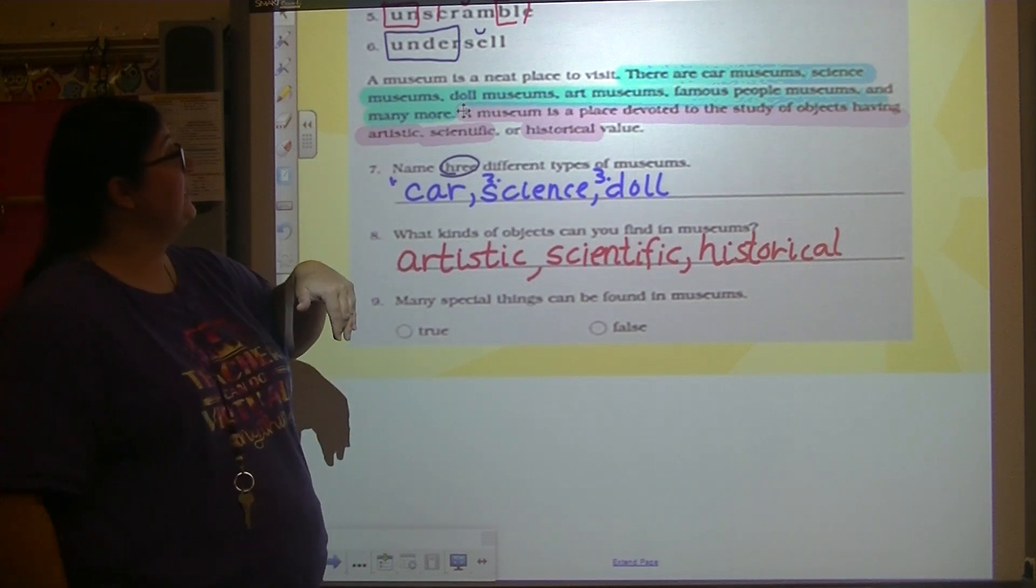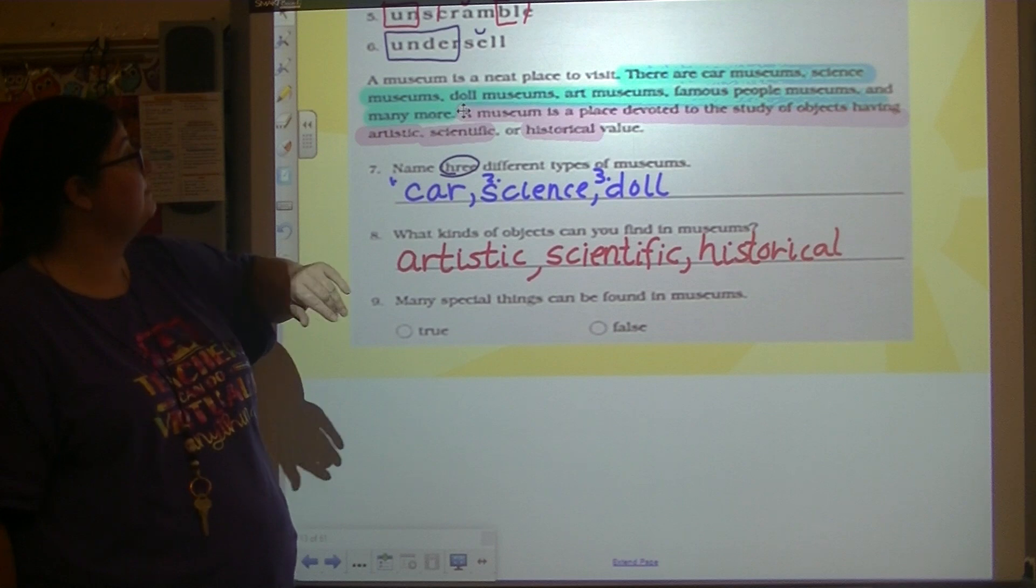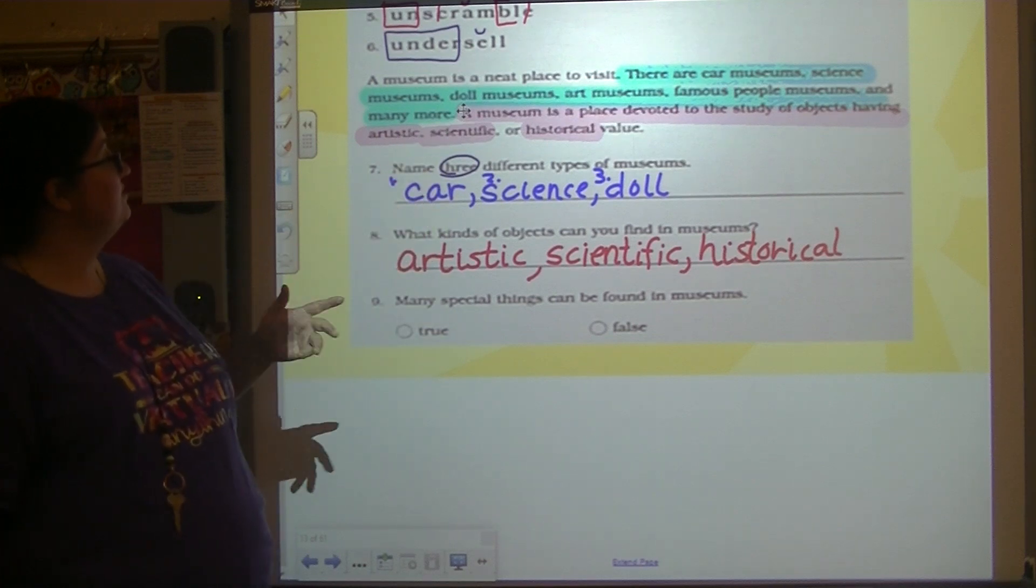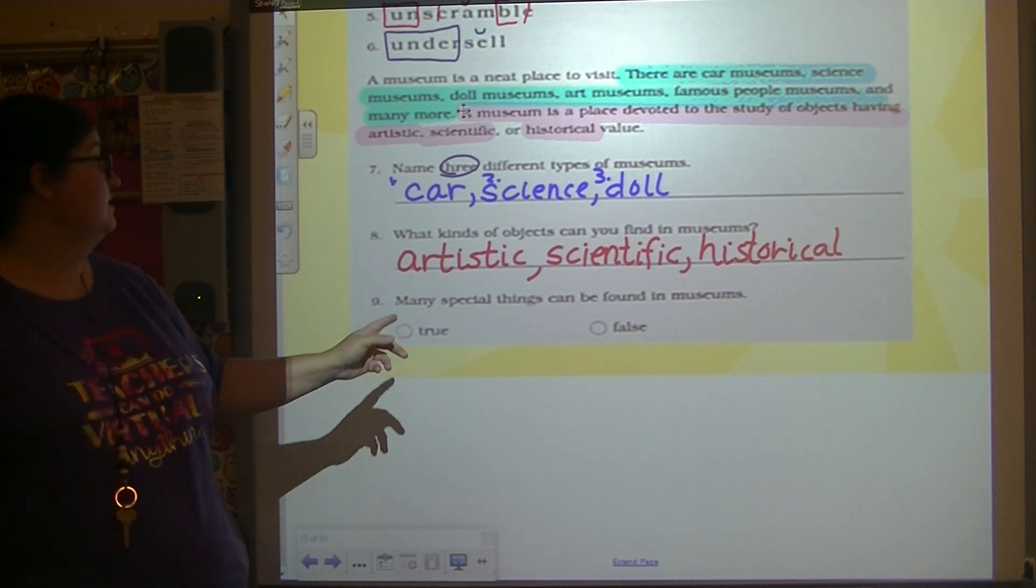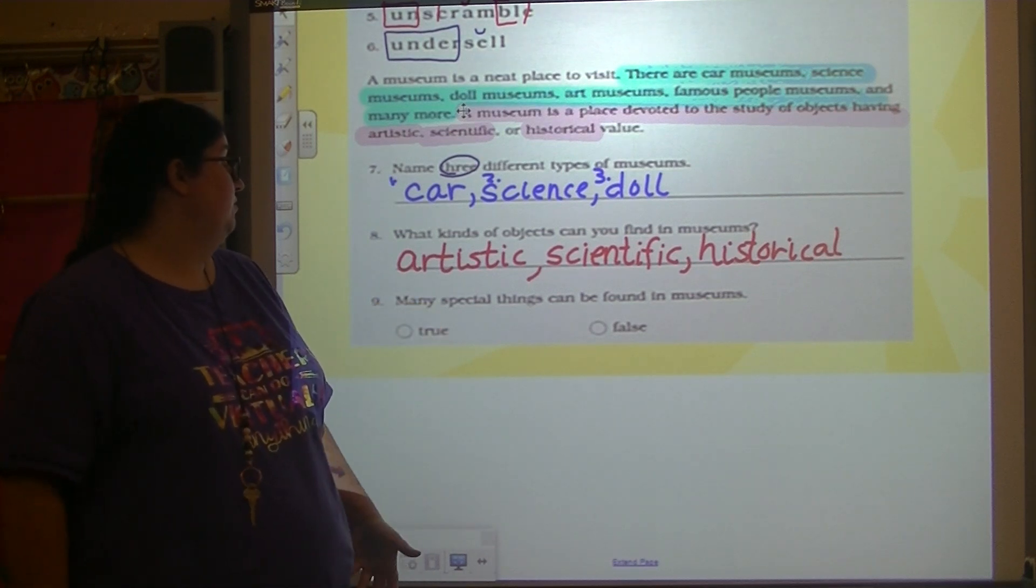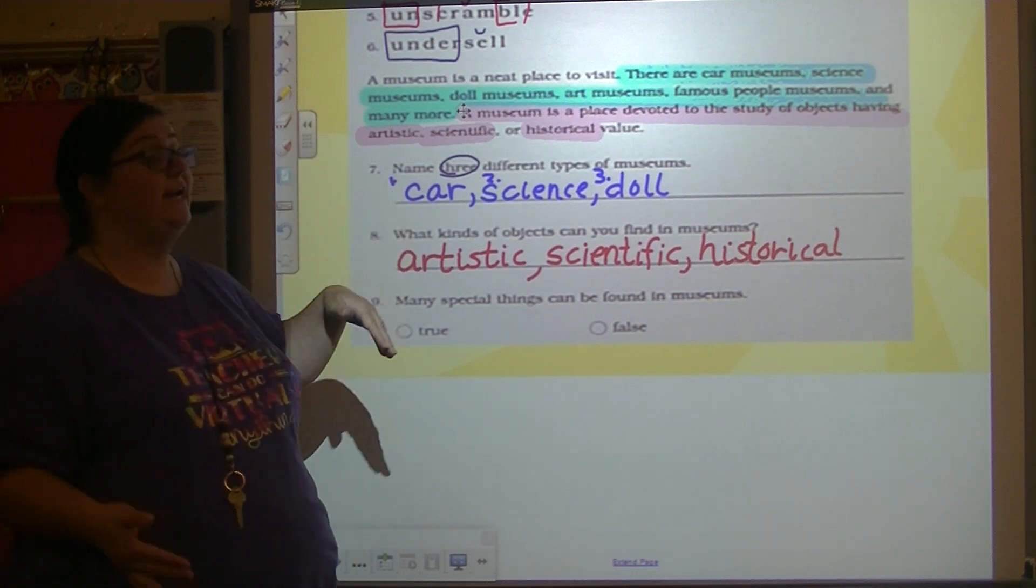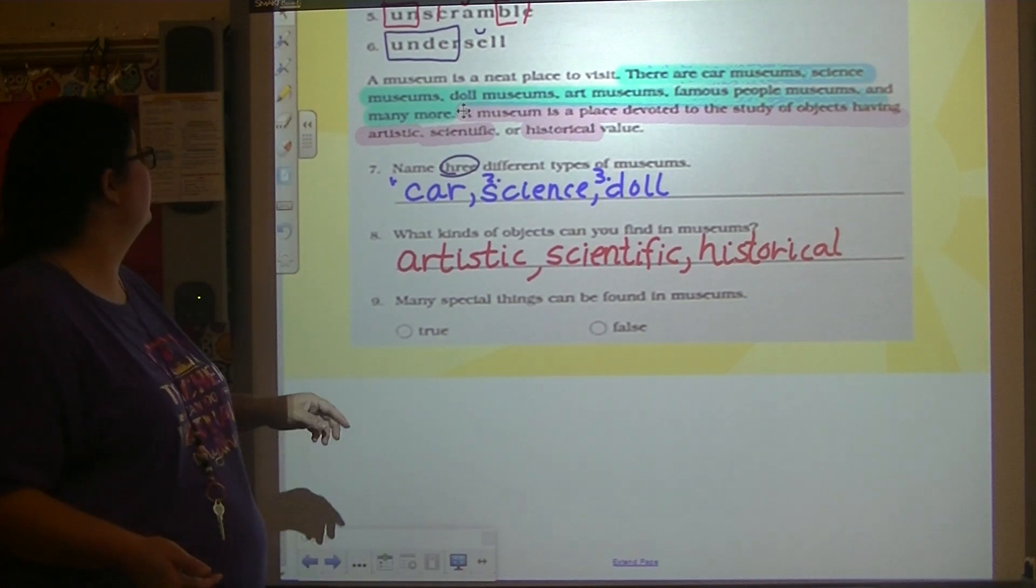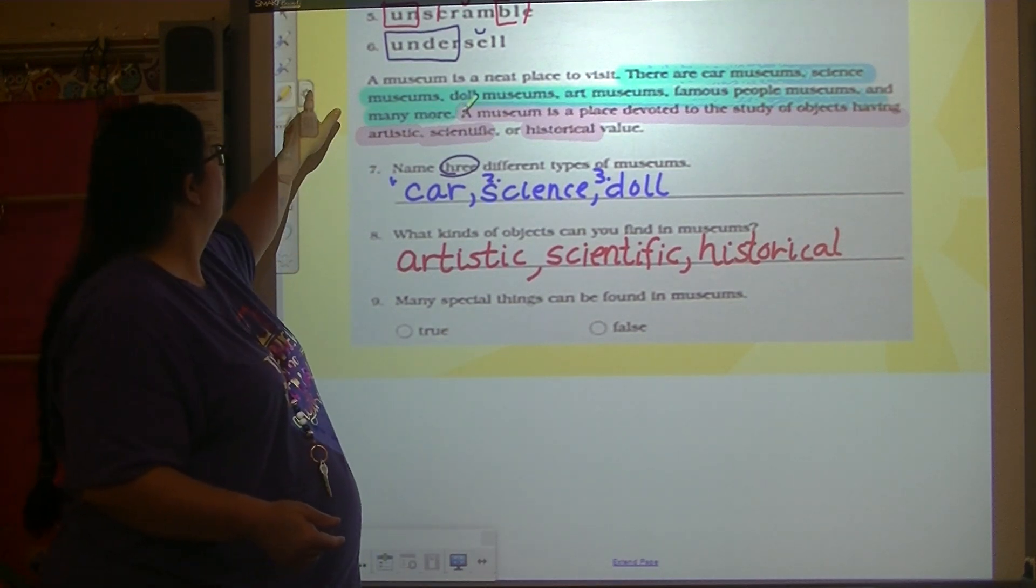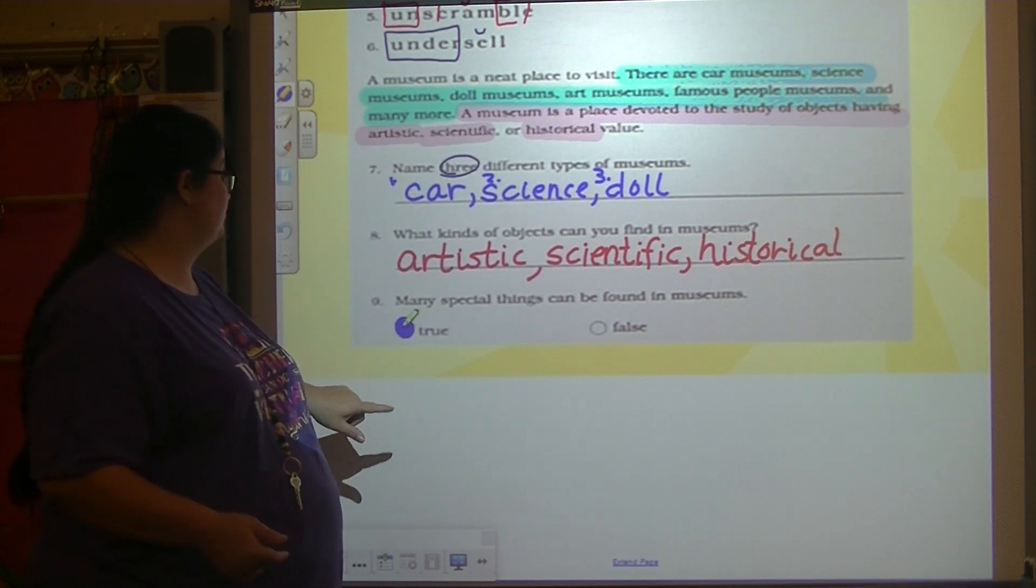We know it's a neat place to visit. They have all of these different types. They're devoted to studying all of these different things of value. So are there many special things there? We can infer from what we've read and what we already know. Yes, there are special things found at a museum. So true.